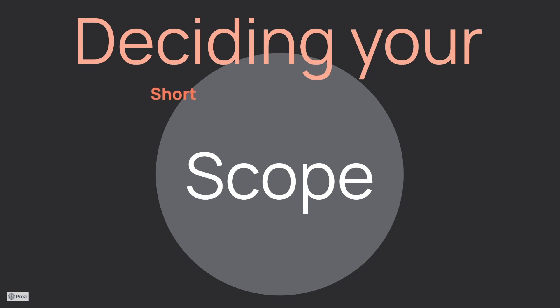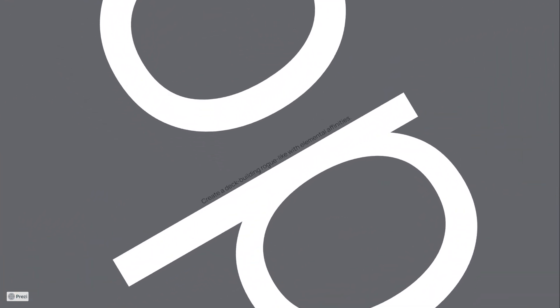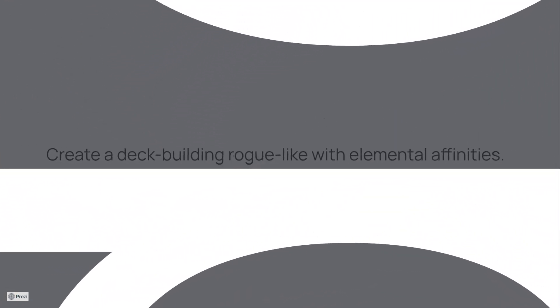It needs to be short, simple, and especially at the beginning, vague. For instance, in our other tutorial series, we are going over how to create a deck-building roguelike card game. Our scope statement is going to be something pretty simple, along the lines of: create a deck-building roguelike with elemental affinities. So we have our action — creating this game — some specifics like deck-building roguelike, and then something unique: a focus on elemental affinities.